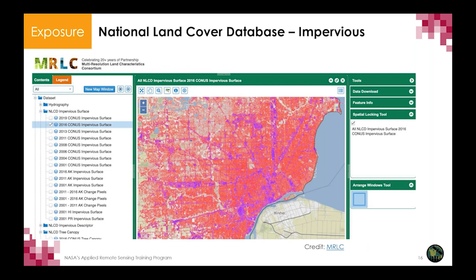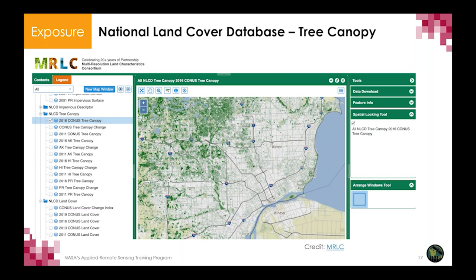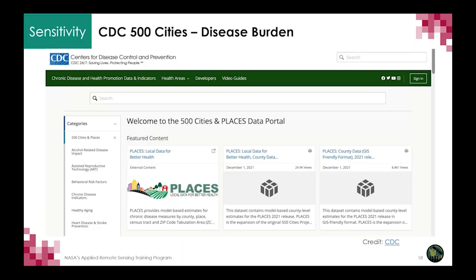Another exposure dataset commonly used is the National Land Cover Database, or NLCD. We think of impervious surface as a proxy for temperature or a proxy for urban heat island intensity. We selected the 2016 layer to match the other data we're collecting for this HVI construction. Similarly, from the NLCD, we can also get tree canopy data. For much of Detroit, there is not a lot of tree canopy coverage, which we think is important to include in our HVI.